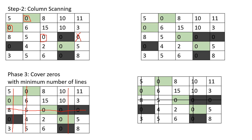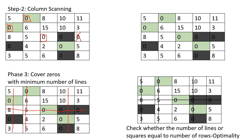We count the lines: there are four lines. To check optimality, we compare the number of lines with the number of rows. The number of lines is four and the number of rows is five — so optimality is not achieved. We must continue to step four.